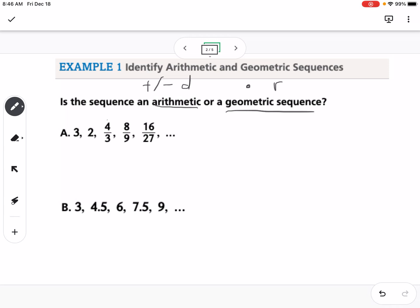If we look at the geometric sequence, we take the later number divided by the earlier number. So 2 divided by 3 is 2 thirds. Then if we take 4 thirds divided by 2, that's cutting 4 thirds in half, which is 2 thirds. Then if we do 8 ninths divided by 4 thirds, we keep it, change it, flip it.